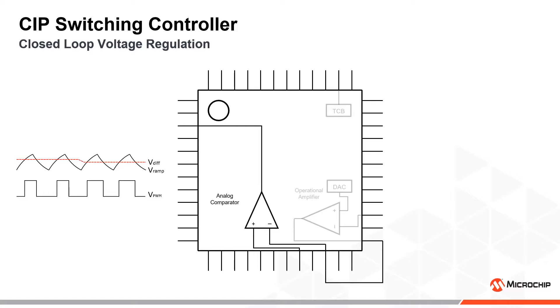The reference signal is generated using the waveform generation functionality on the timer counter B peripheral. The timer is set to 8-bit PWM mode with a 50% duty cycle and frequency equal to the desired switching frequency.